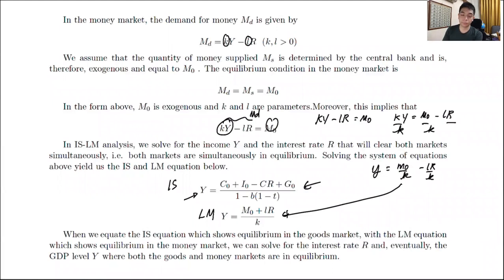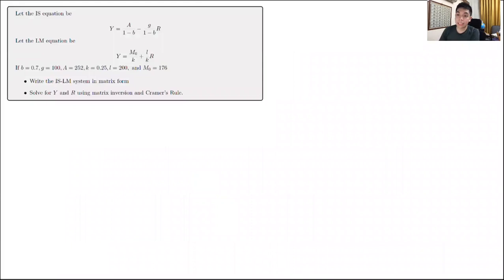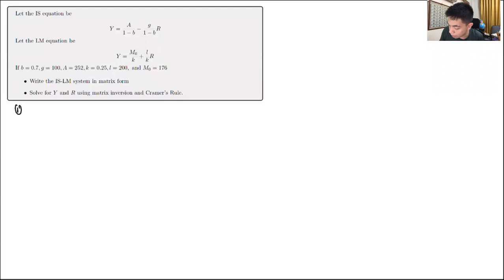When we equate the IS equation, which gives equilibrium in the goods market, with the LM equation, we can solve for the equilibrium level of interest rate and national income. Let's start with an example using matrix algebra. We are given an IS equation and an LM equation, and we need to first write the ISLM system in matrix form, then solve for Y and R using Cramer's rule.